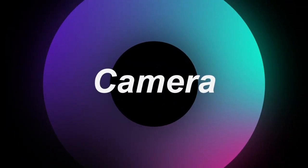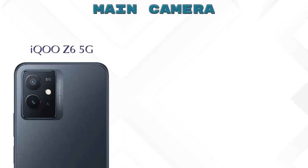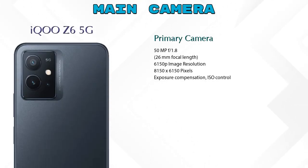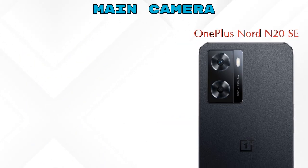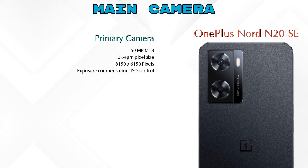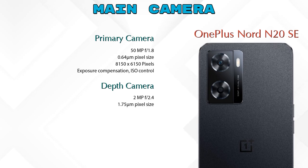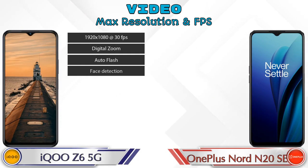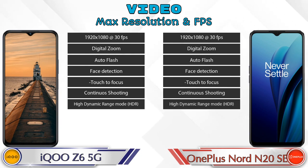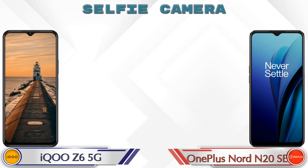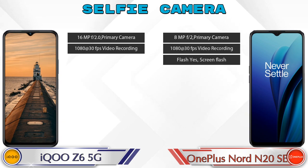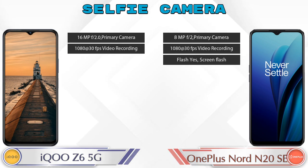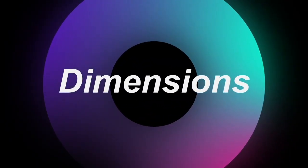Now let's talk about cameras. The iQOO Z6 5G has three rear cameras: a primary camera, a macro camera, and a depth camera. For video, both phones support seven different types of video features. For the front selfie camera, the iQOO Z6 5G has a single camera with two features, and the Nord N20SE also has a single camera but with three features.